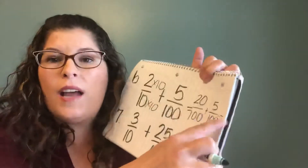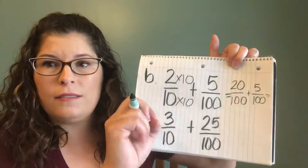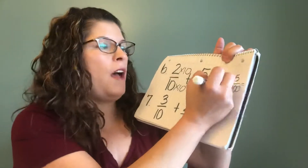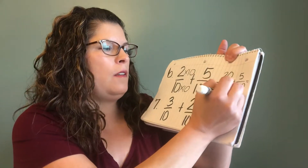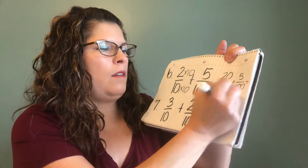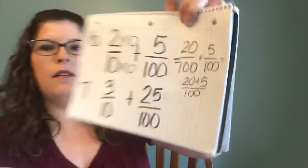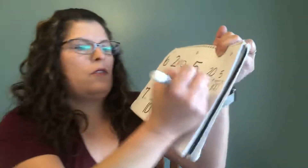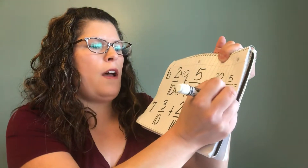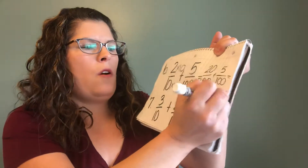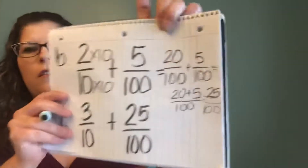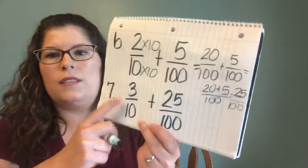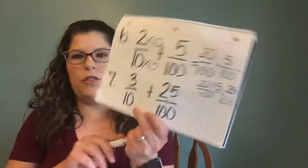So instead I have 20 over 100 plus 5 over 100. Now the denominators are the same, so I can add or subtract them. So 20 plus 5 over 100 — that's how we're going to do it. You're just going to add across: 20 plus 5 equals 25 over 100. That is how we do that for the answer.